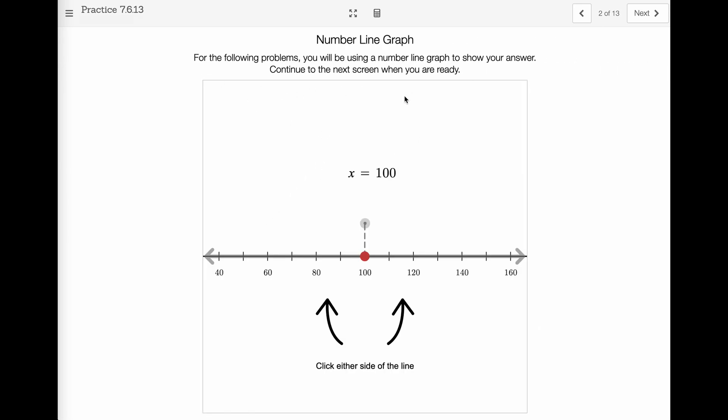Number line graph for the following problems. This just shows you how to use it. When this is filled in, it means that it includes 100, and when it's not filled, it means that it's less. And then sliding changes the point of that.